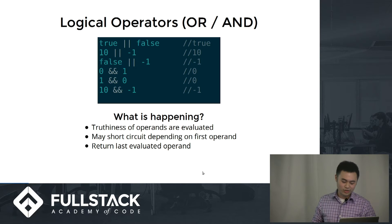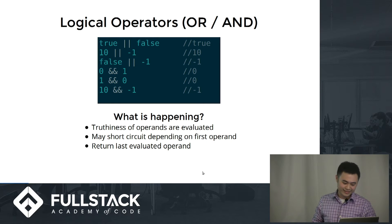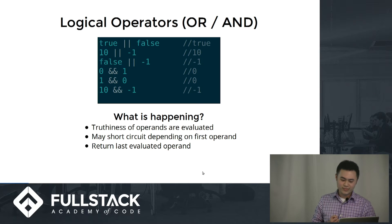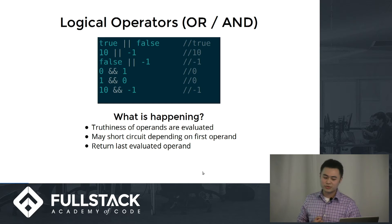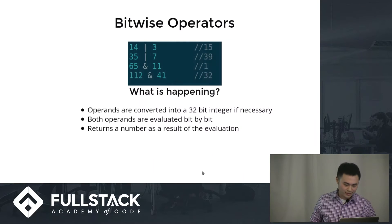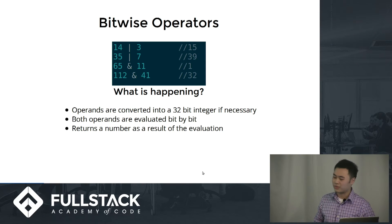So let's go to false. False OR negative one — false is falsy, like it sounds. So I have to check the second operand, which is negative one, which is truthy. But even though it might be falsy, it'll still return since it's the second or last operand to be evaluated.